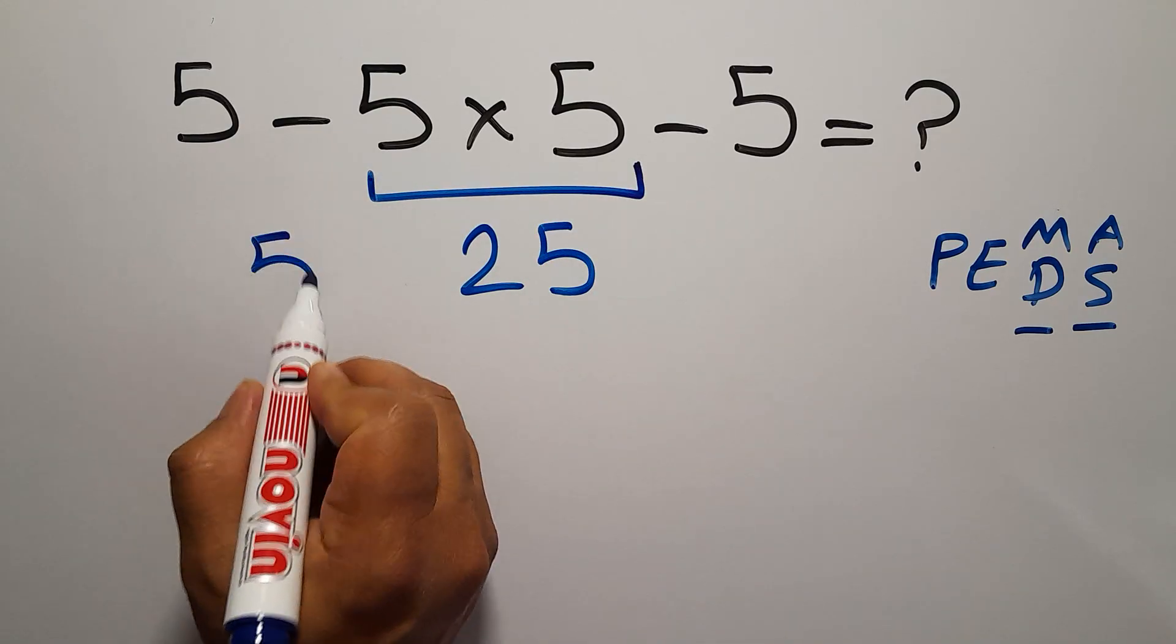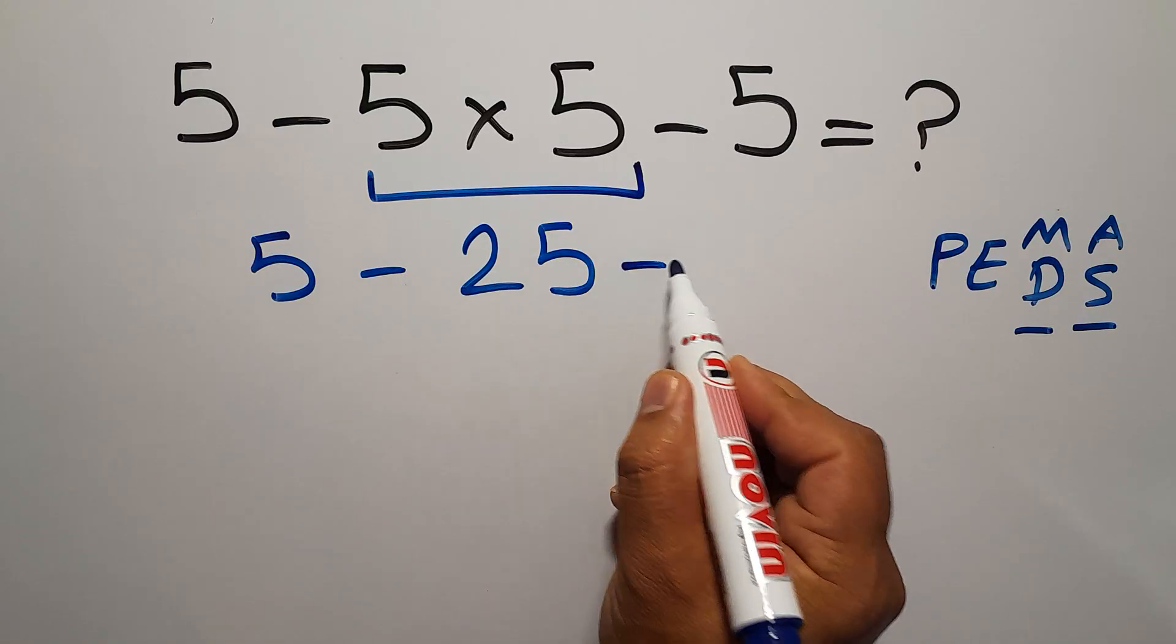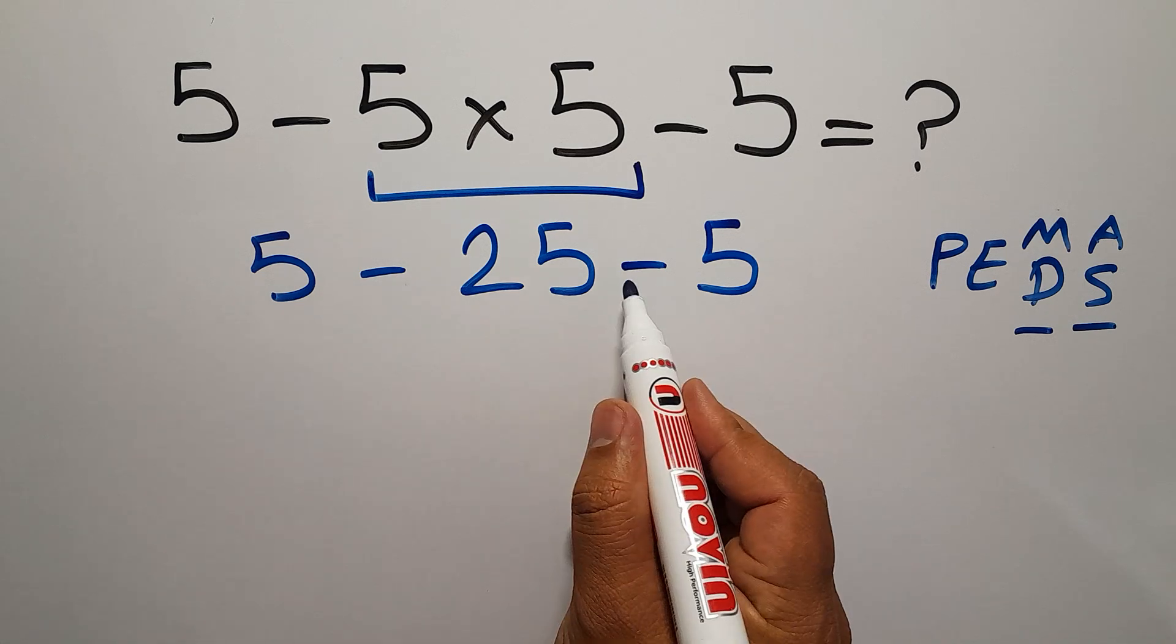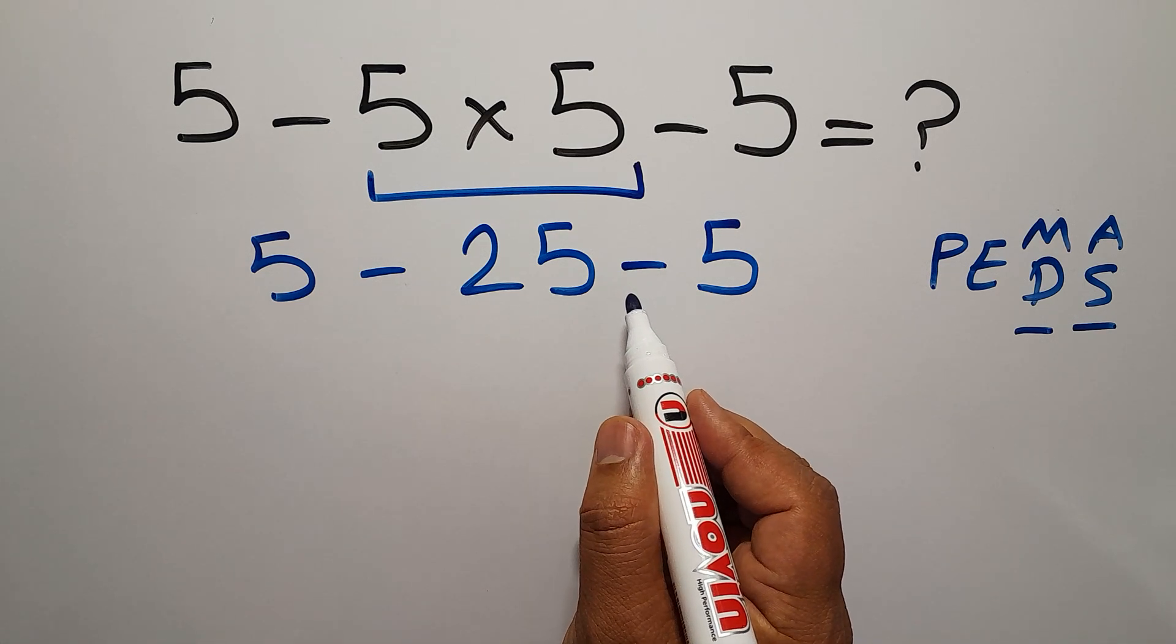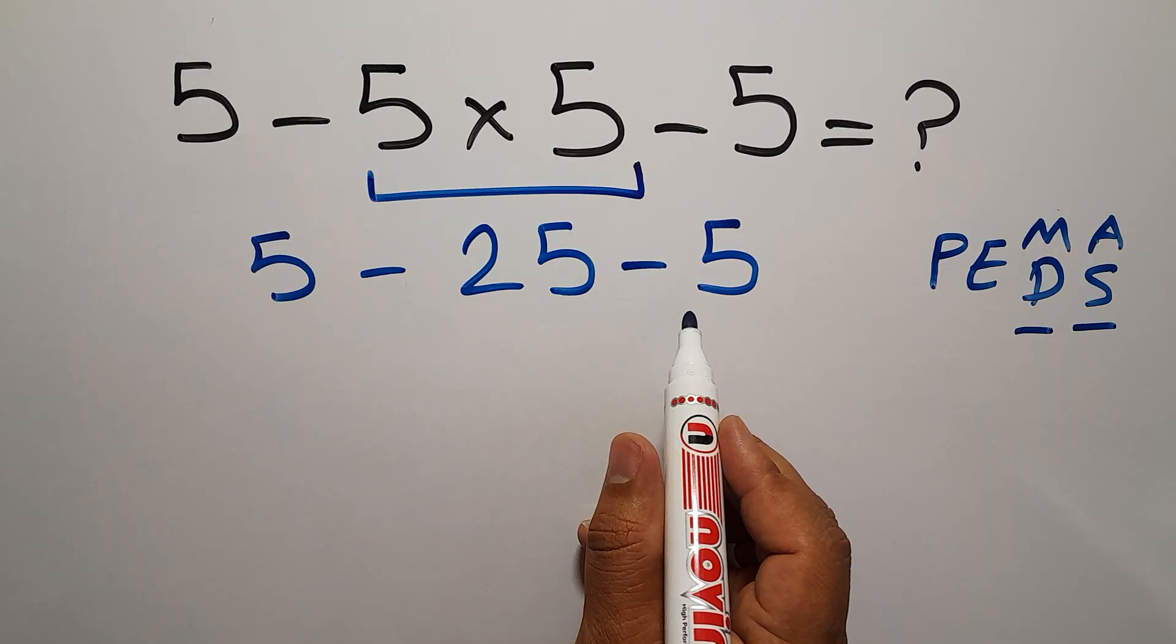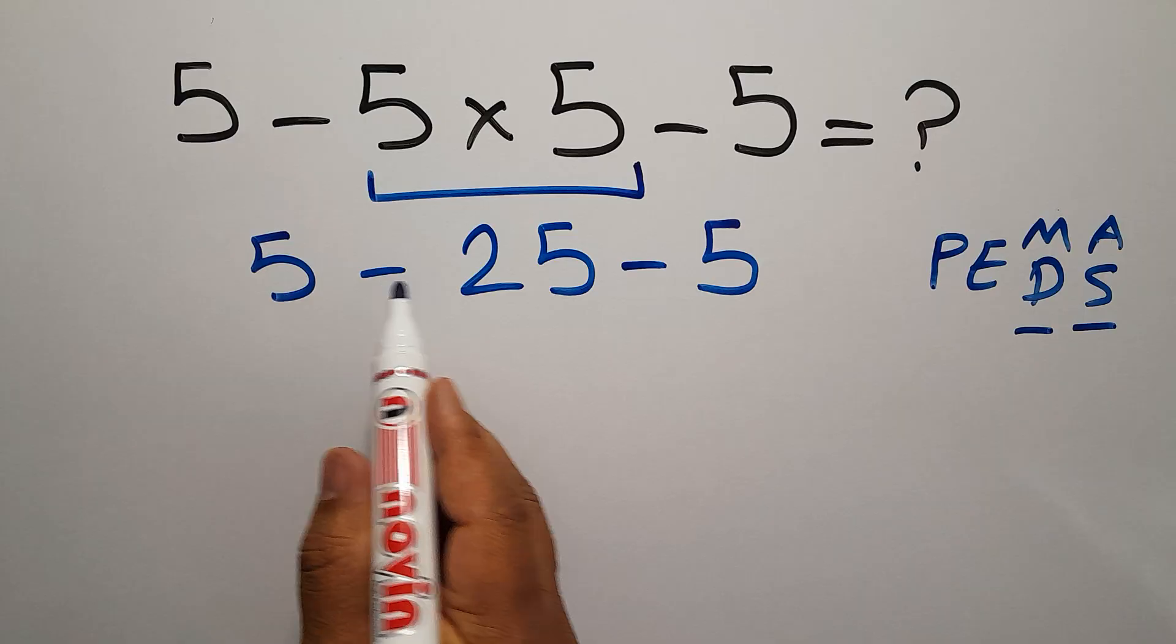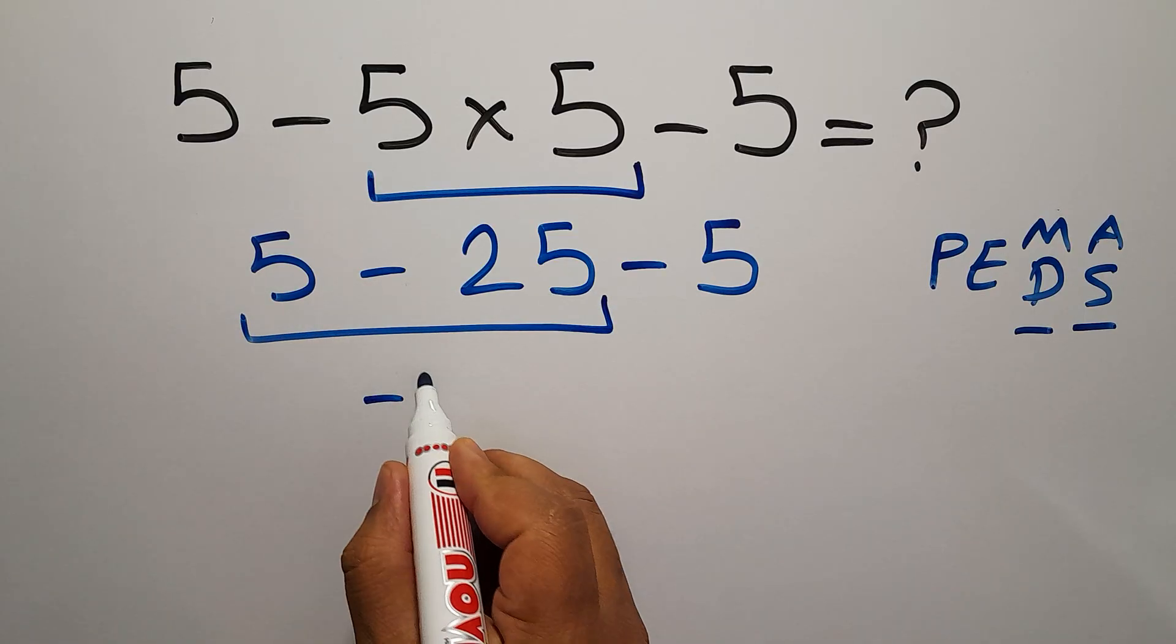So we have 5 minus 25 and minus 5. We have two subtractions. And when we have more than one subtraction in one expression, we have to move from left to right. So first, 5 minus 25, which equals negative 20.